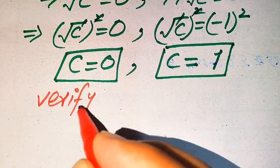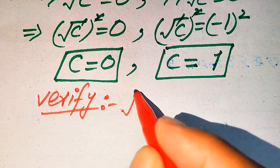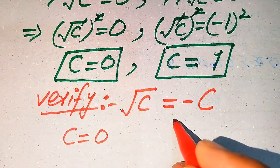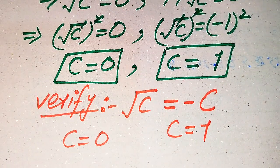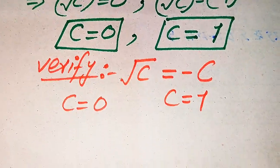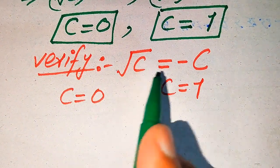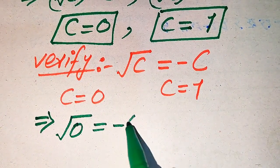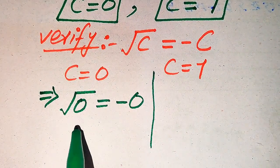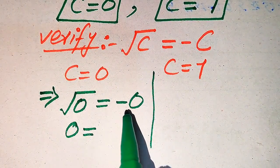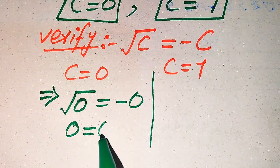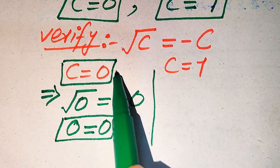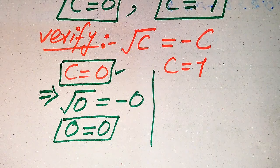For verification we copy down the given equation: square root of C equals minus C. First we verify C equals 0: substituting gives square root of 0 equals minus 0, which is 0 equals 0. Since 0 is neutral — neither negative nor positive — this is satisfied. So C equals 0 is a solution of the given equation.